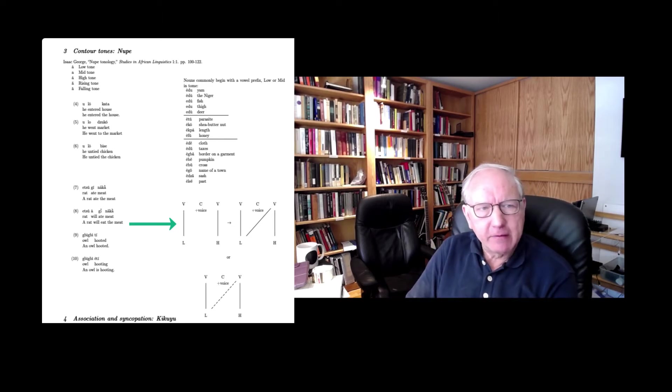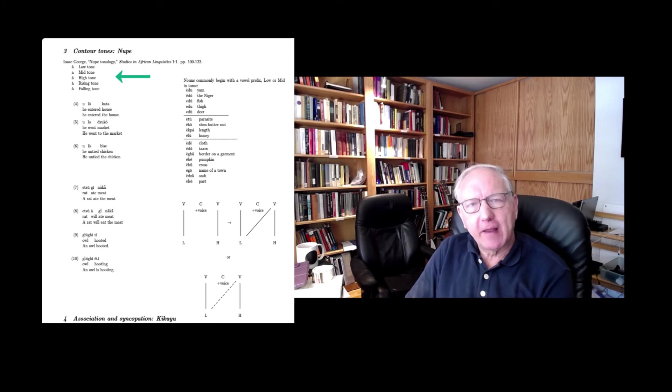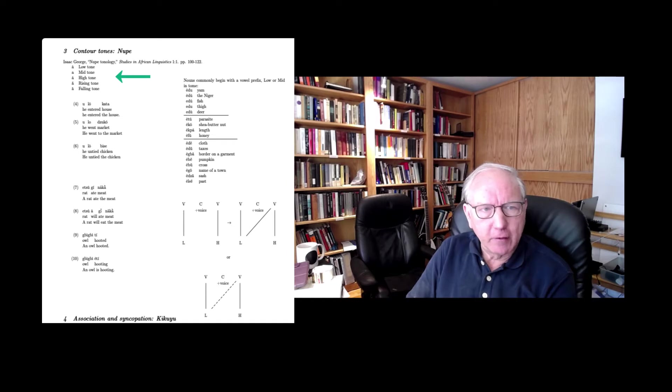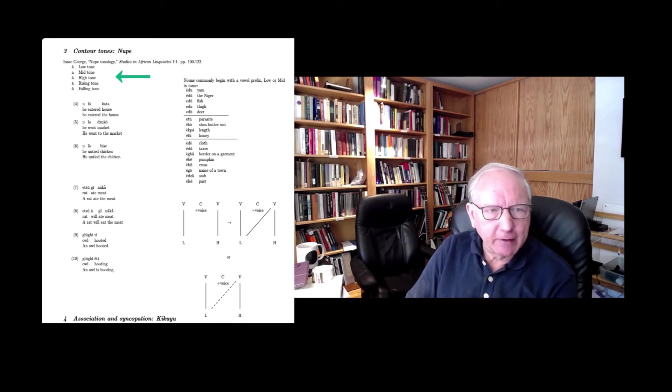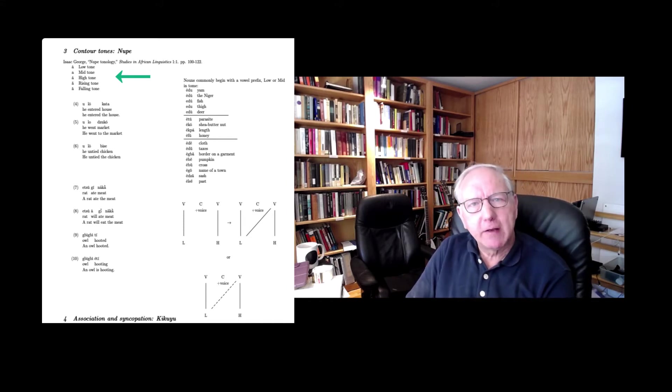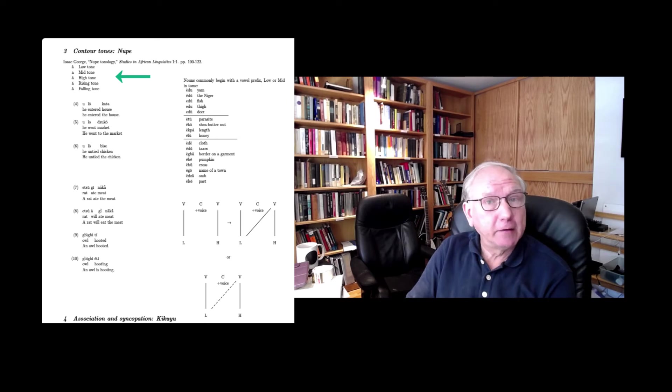So let's just see why one would want to say that. Isaac George points out that there are, we could say five, from a descriptive point of view, there are five tone patterns that can be found on a vowel. There's low, mid, and high. And then there are two contour tones. There's a rising tone and a falling tone. And using the conventions that are standard in the study of African tone, we use an acute accent to mark a high tone, a grave accent to mark a low tone. A falling tone is represented by a high followed by a low, which is to say an acute followed by a grave or simply a circumflex.